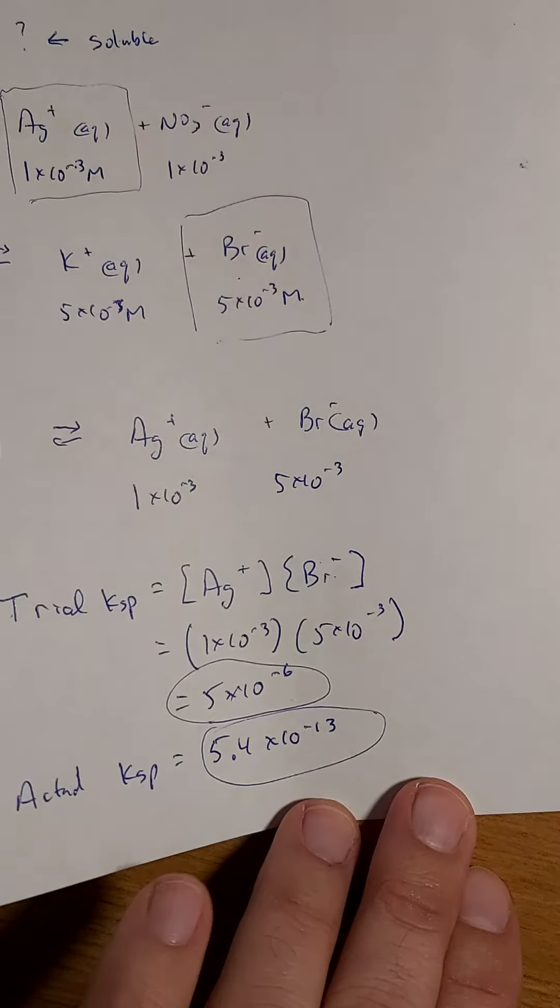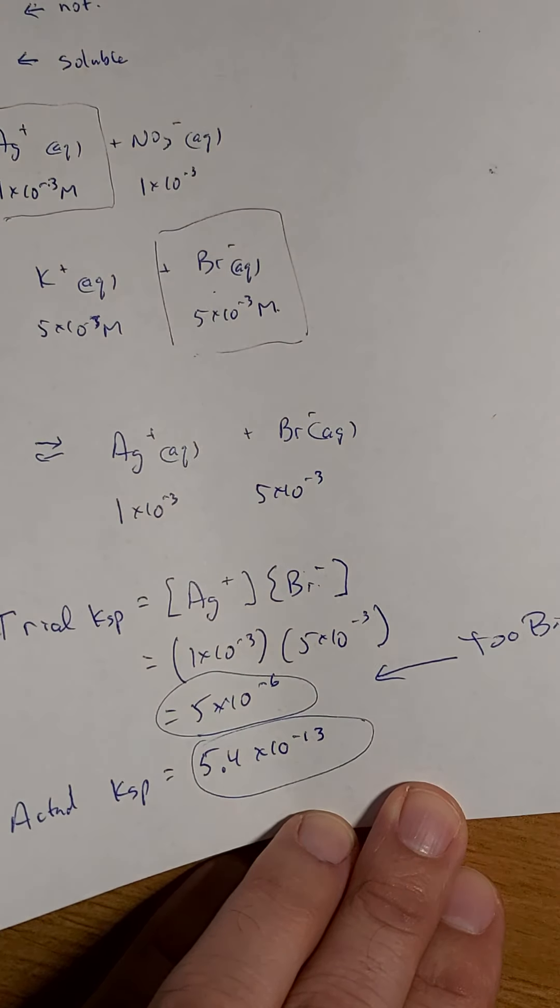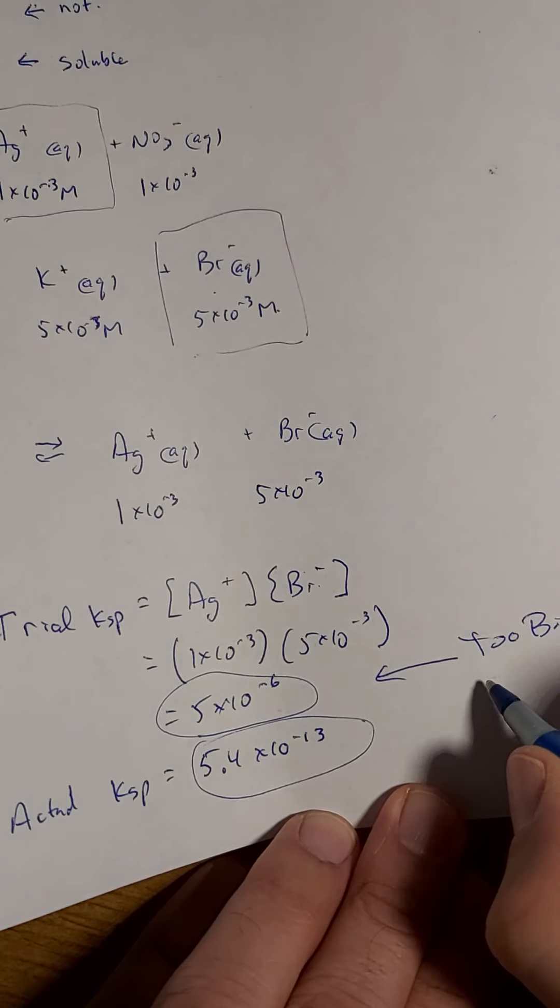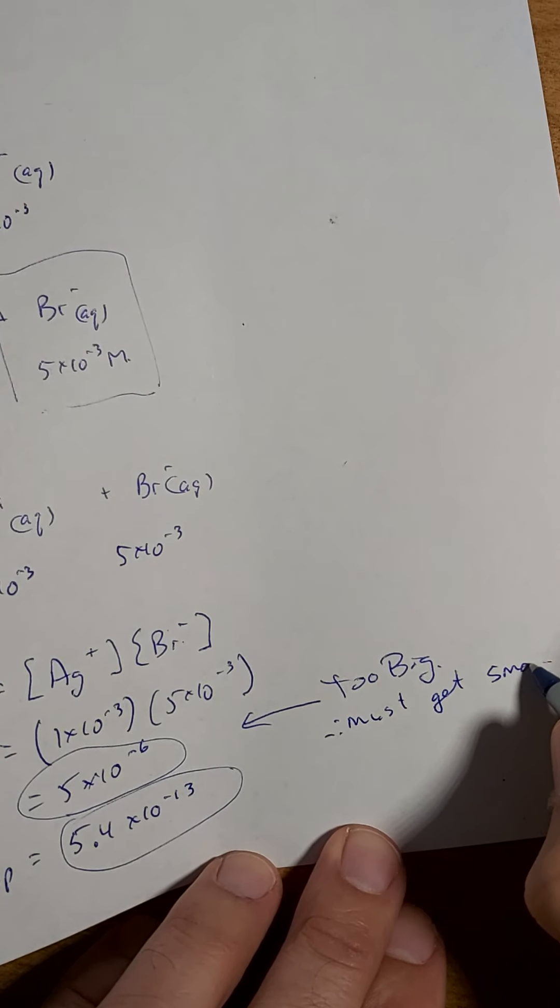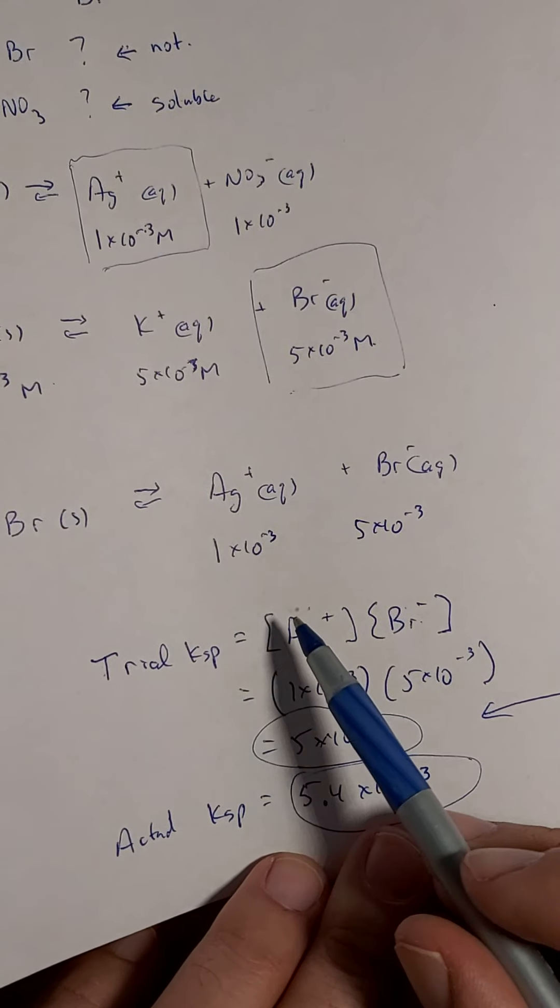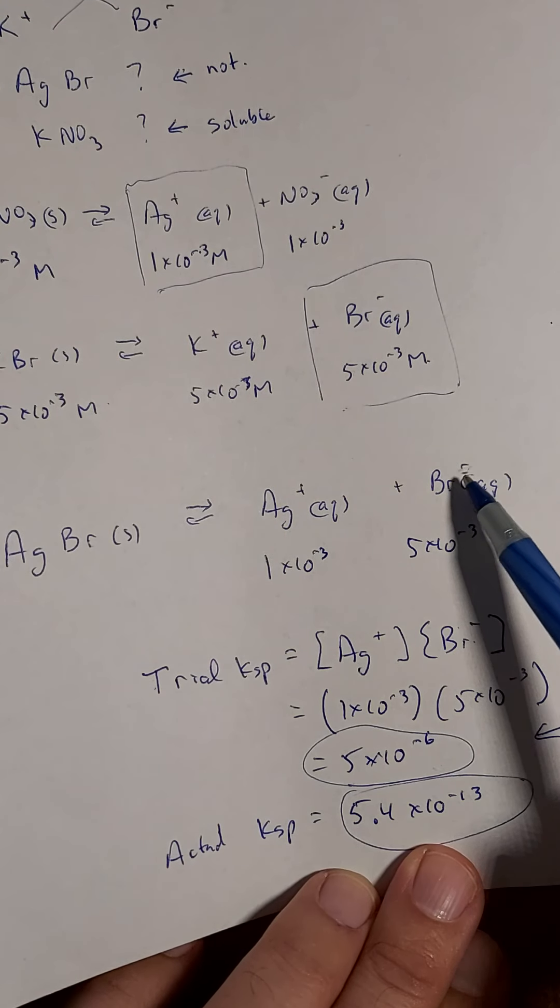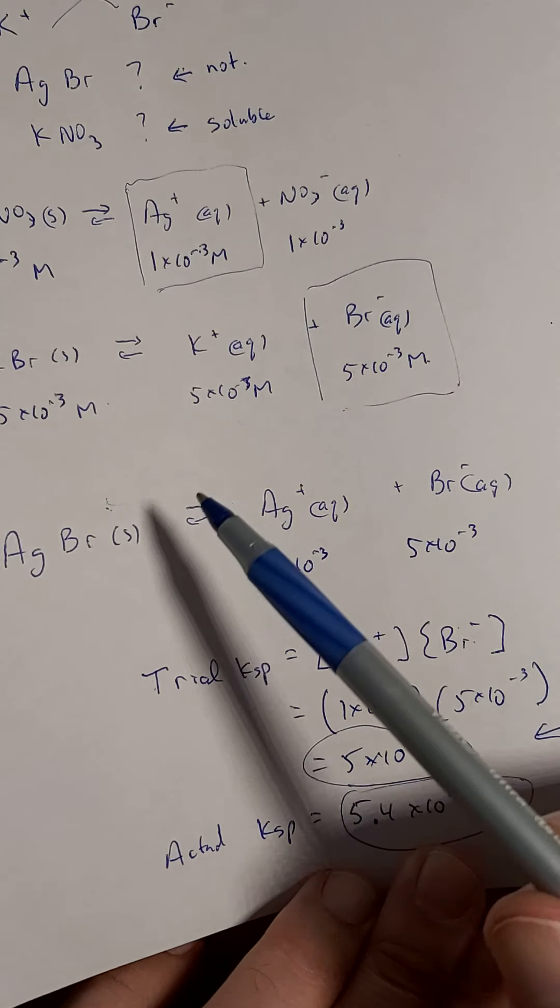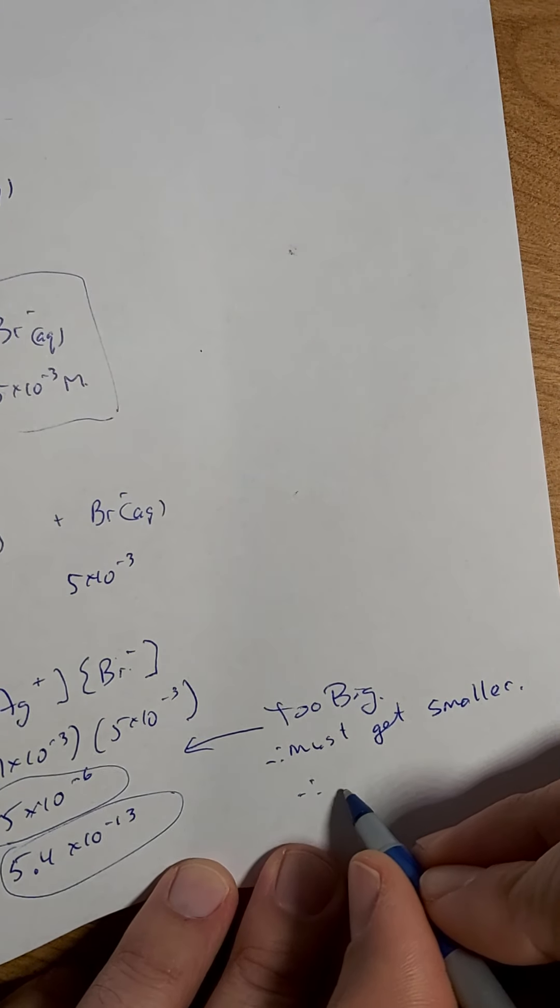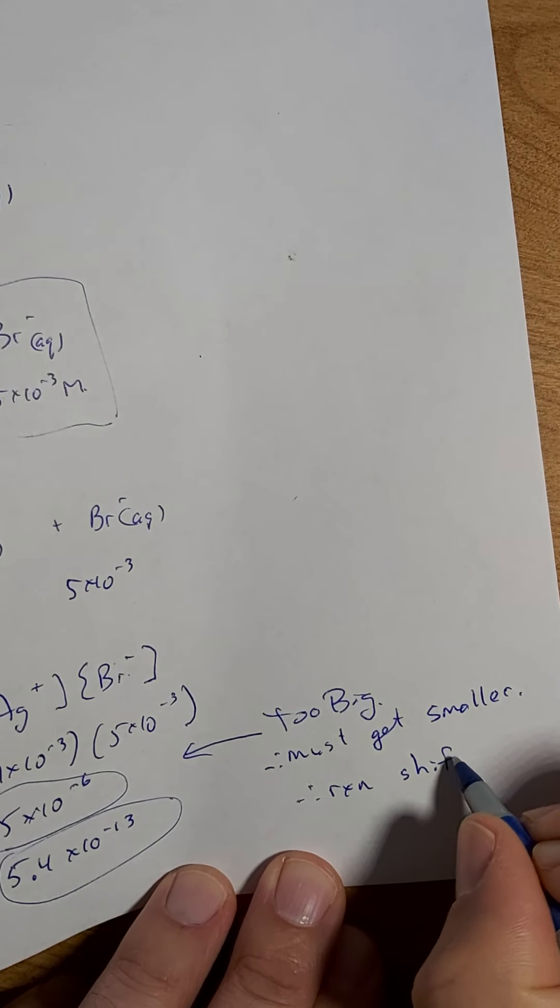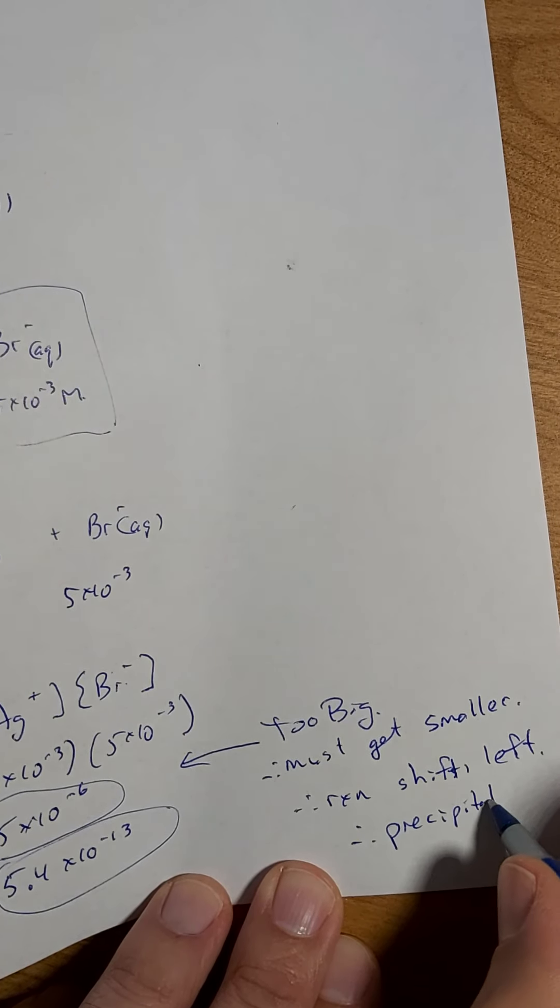So this guy right here is too big. When I compare the two, must get smaller. So how am I going to get these concentrations to get smaller? When I look at the reaction, I have to get this and this smaller. The reaction is going to go left and I'm going to make a solid. So must get smaller. Therefore, reaction shifts left. Therefore, precipitate forms.